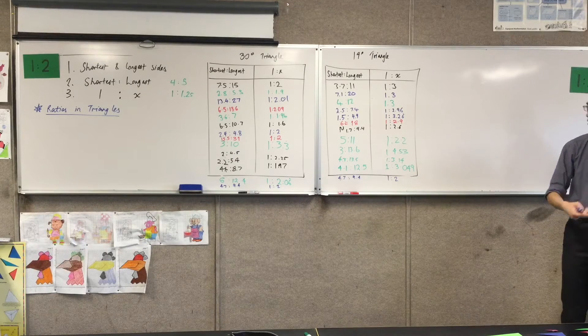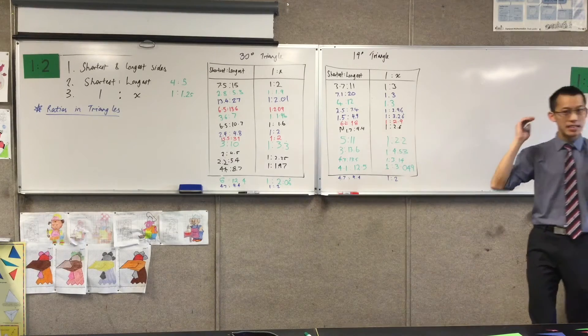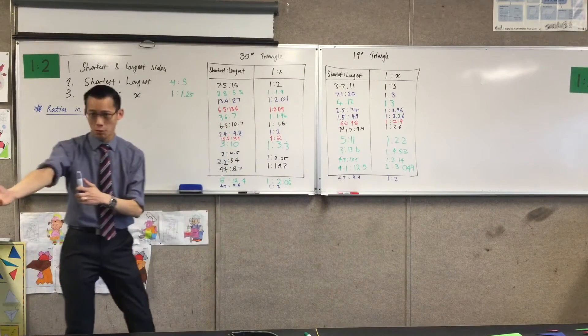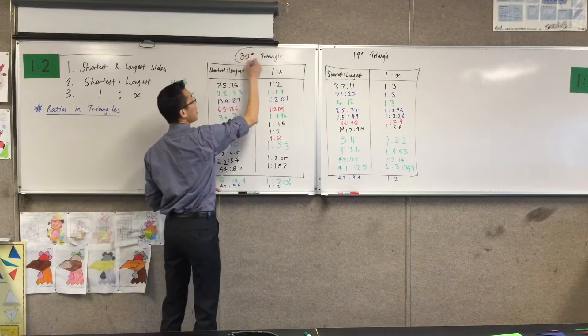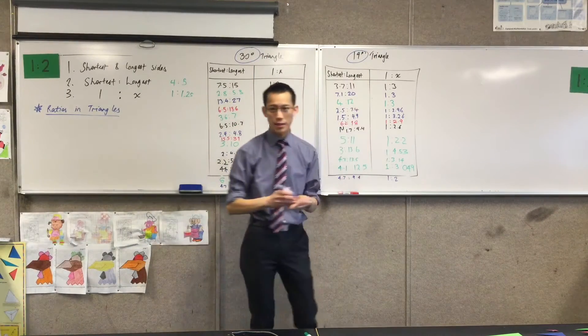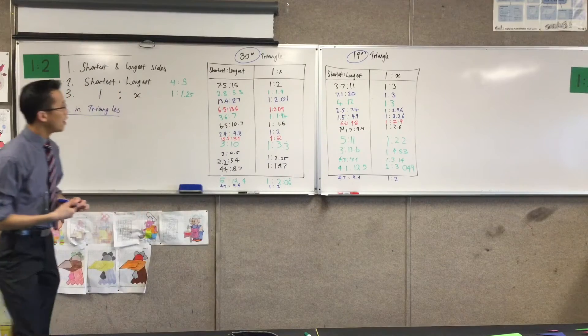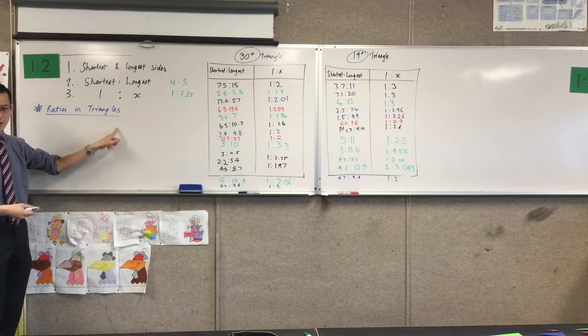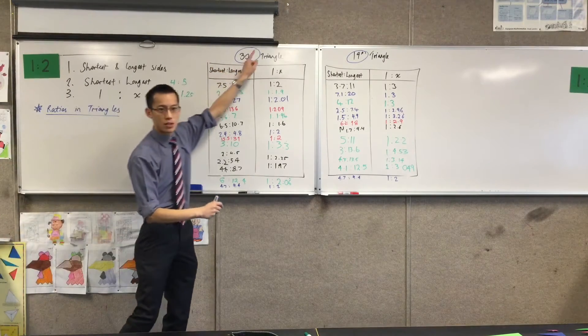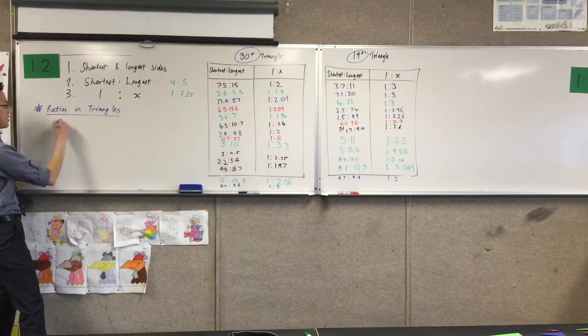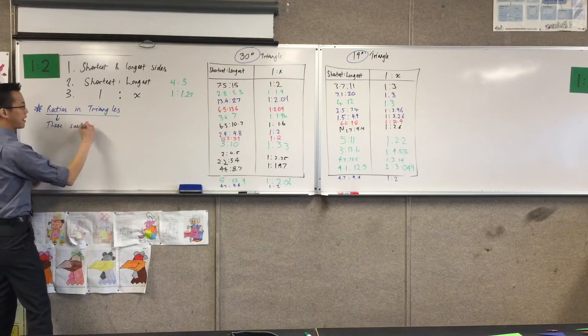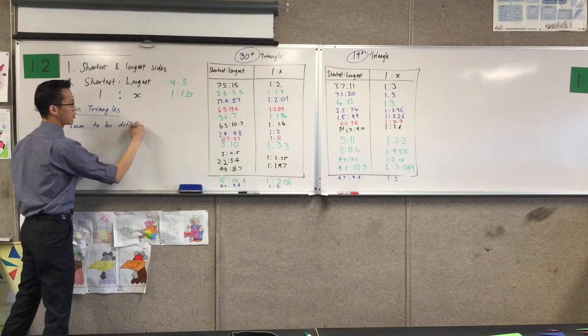But just to rewind, where did all this start? I didn't give you any lengths. All I gave you was, what kinds of measurements did I give you from the beginning? Angles. I gave you angles, right? So I gave you here, the 30 degrees, and here, the 19 degrees. So, what's happening here is, ratios in triangles seem to have this inexplicable link with the angles in the triangles. These seem to be defined by the angles.